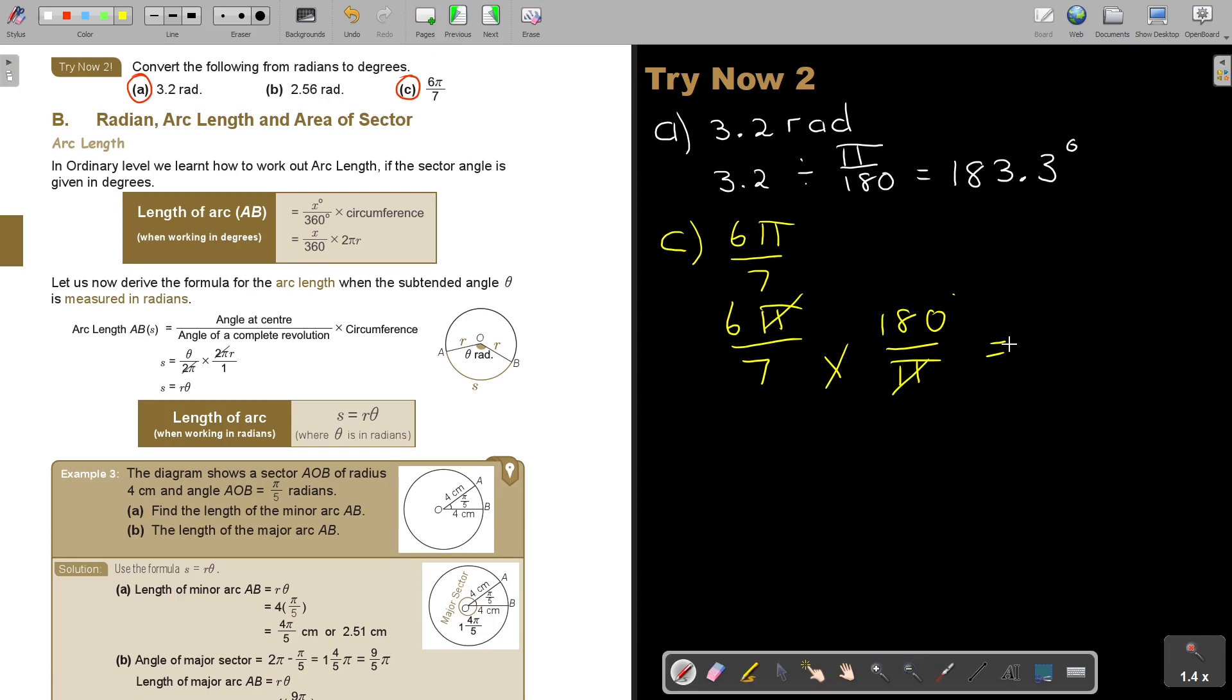So if I'm pressing that on my calculator, I'm just going to say 6 times 180 divide by 7 and I get 154.3 degrees. And that's my final answer. Thank you.